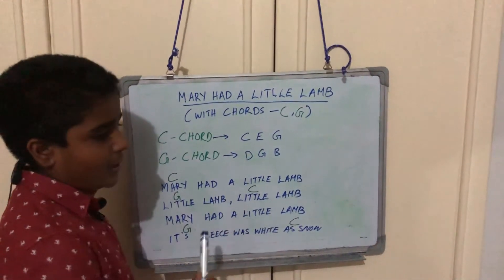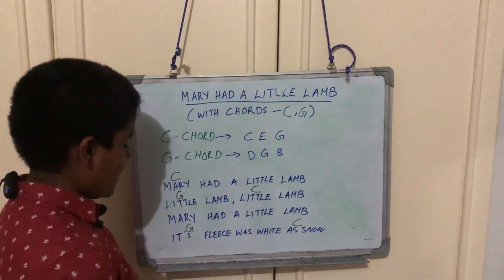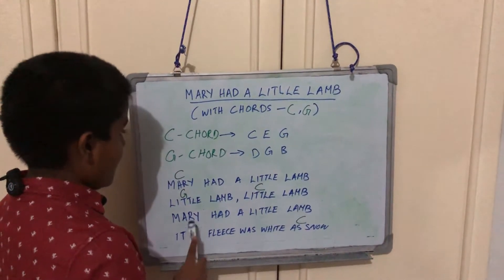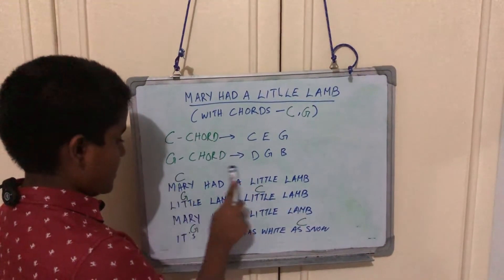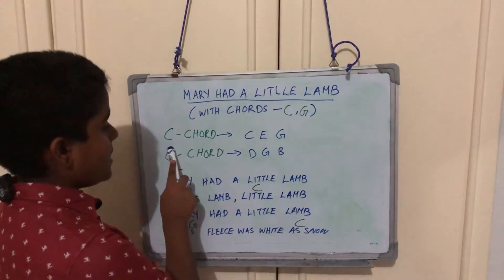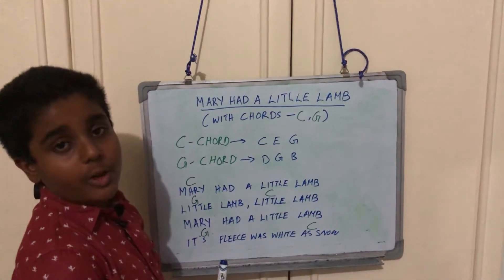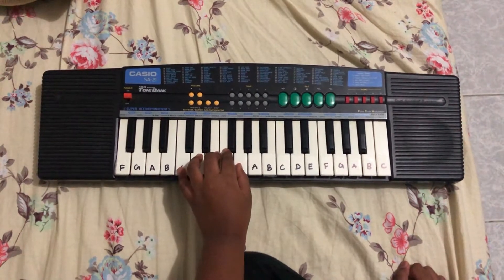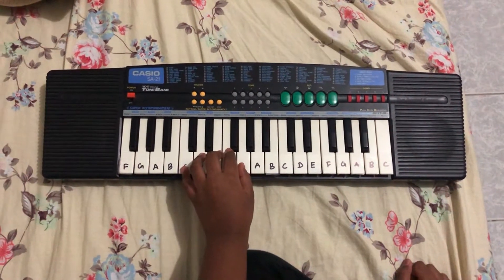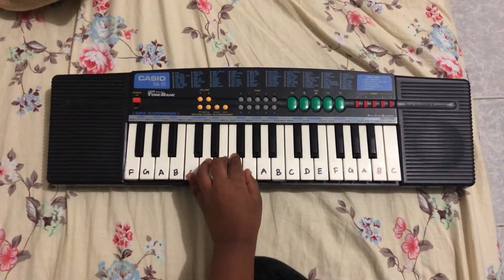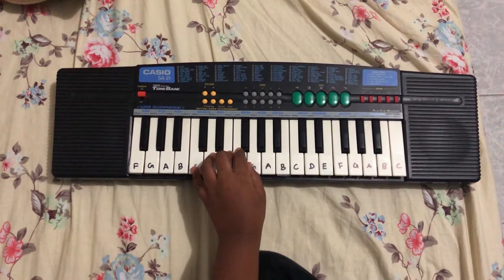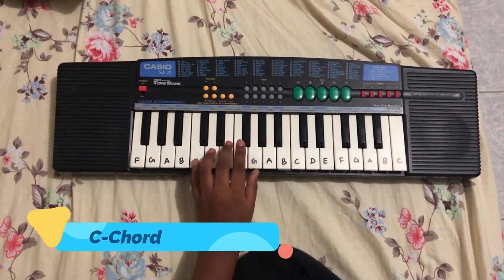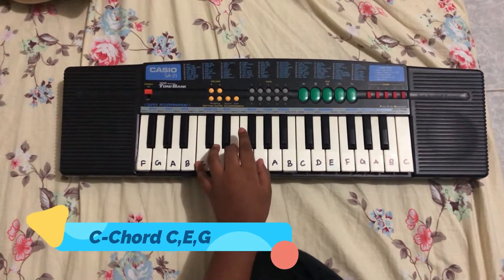For 'Mary Had a Little Lamb' the third time we are not using any chord. 'And its fleece was white' — for that we are using G chord. And 'as snow' is C chord. So let's see how we are playing it. This song is with two chords: C chord and G chord. The C chord is C, E, and G. And the G chord is B, D, G.